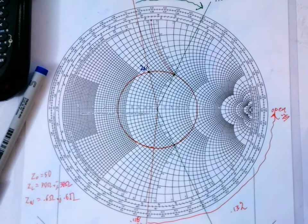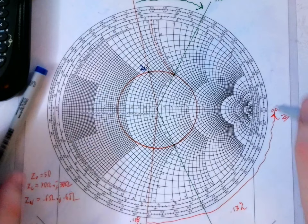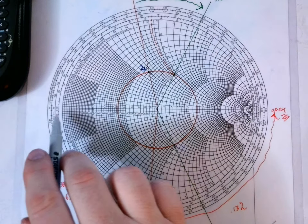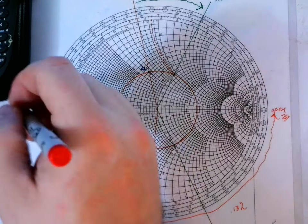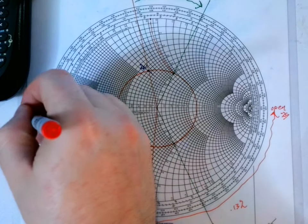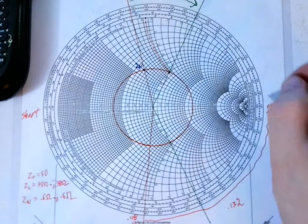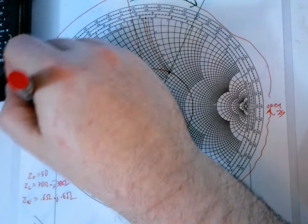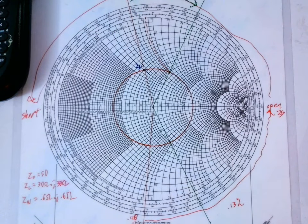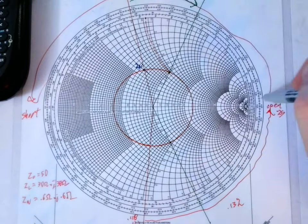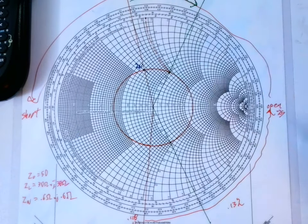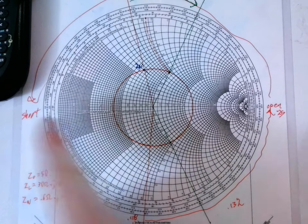Okay, so that's for an open. If we wanted a short, well, this side of the real line is the equivalent of a short. So, for a series, if we're going for a short, we need to come the rest of the way over here. And a quick trick, this is one half of this arc is .25 wavelengths. So, if you add .25 to .132, that is what you should get for the series stub, for a short series stub, and an open series stub.